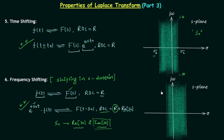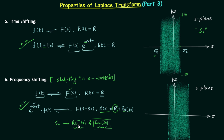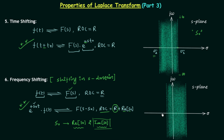There is no change due to the imaginary part of s₀. The real part of s₀ shifts the ROC horizontally. So σ₂ becomes σ₂ plus the real part of s₀, and σ₁ becomes σ₁ plus the real part of s₀. This is why the new ROC is R plus the real part of s₀, and we do not include the imaginary part of s₀. That concludes the frequency shifting property of the Laplace transform.